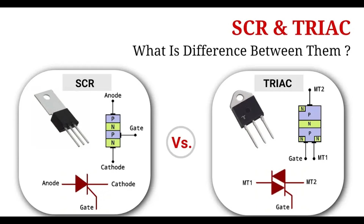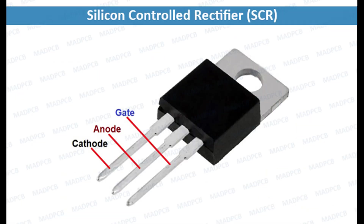The SCR has three terminals. Anode (A), connected to the outer P-type layer. Cathode (K), connected to the outer N-type layer. Gate (G), connected to the inner P-type layer near the cathode.